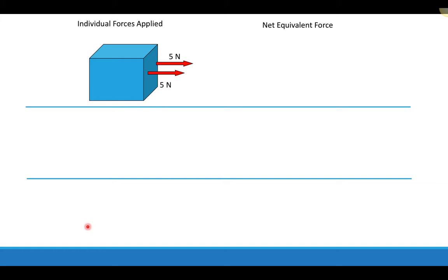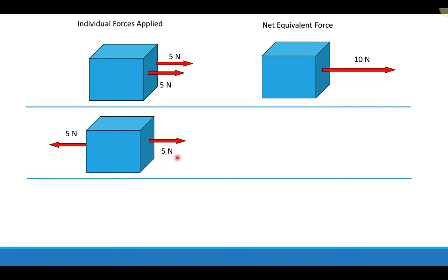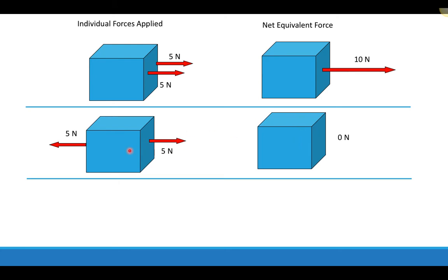What does net force actually mean? You can have more than one force applied on an object. When we talk about the net or equivalent force, we mean describing multiple forces as a single force, taking direction into account. If both forces point to the right — five and five — they equal ten. If five newtons points right and five newtons points left, the net force is zero because they cancel out, meaning no acceleration and the object won't move.